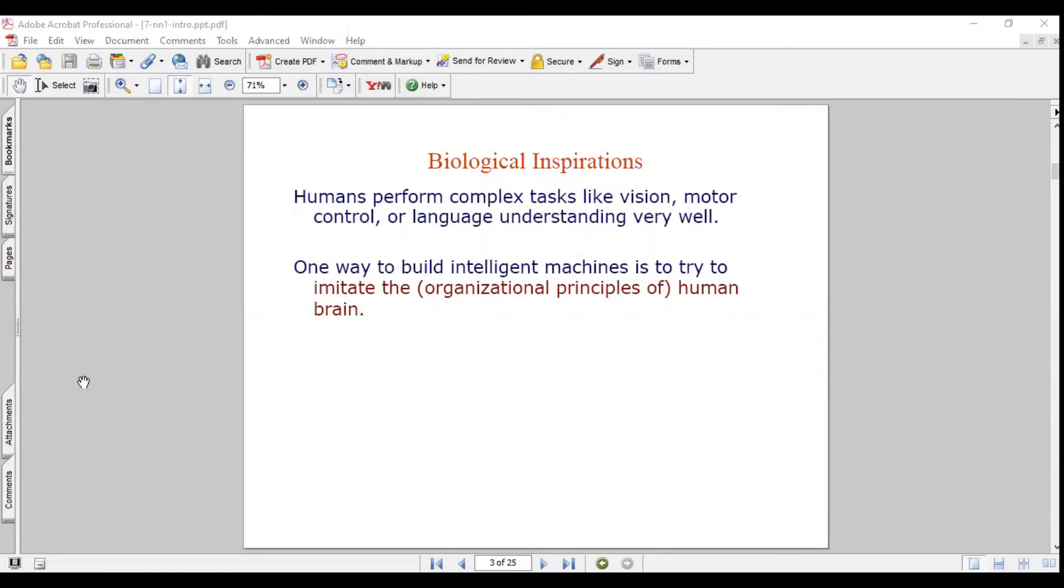The biological inspirations is crucial in understanding ANNs. Humans perform complex tasks like vision, controlling our motor system, understanding languages, talking and interacting with others. These are all complex tasks which are involved. One way to build intelligent machines is to try to imitate the human brain.